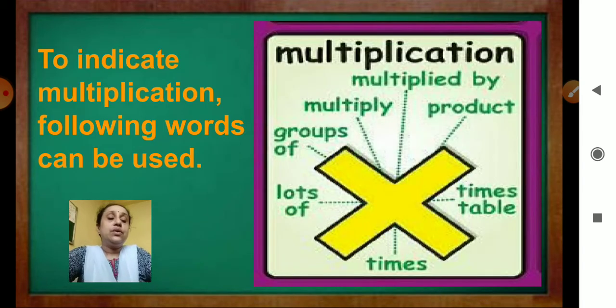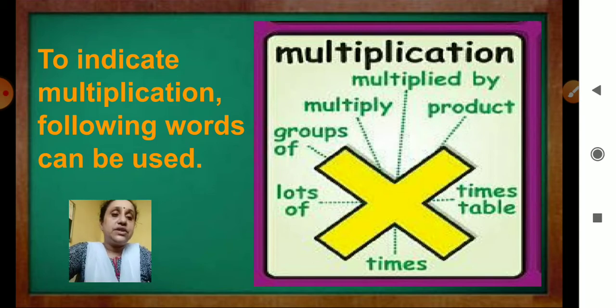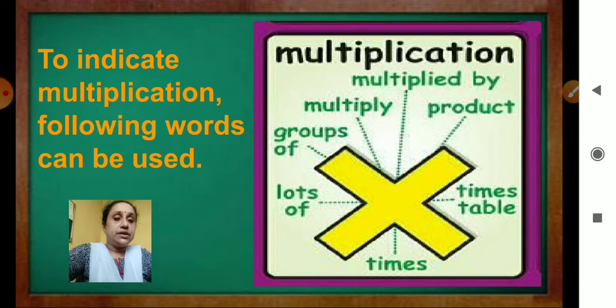Now, look here, there is one chart. To indicate multiplication, following words can be used: Multiplied by, multiply, product, groups of, lots of, times, times table.